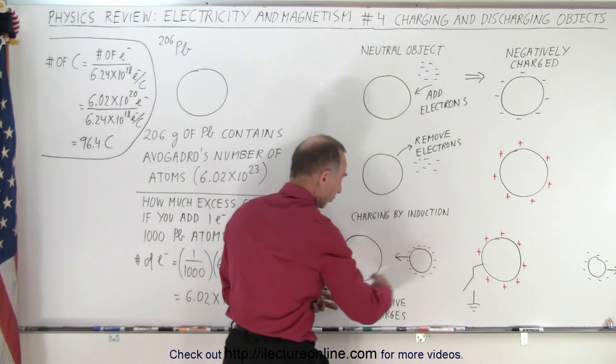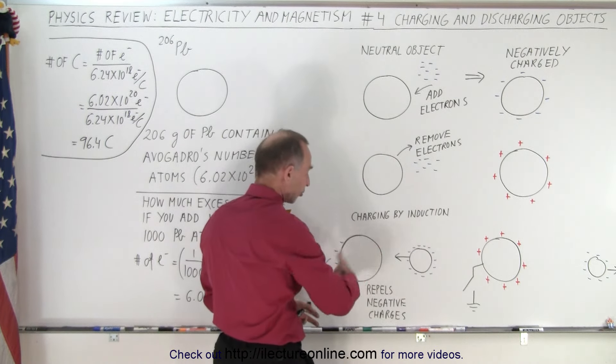Let's say we start with a neutral object. Now these are conductors. Conductors allow charges to move freely throughout the object, on the surface of the object. So let's say that we have a neutral object, which means it has just the same number of protons as electrons, and now we add additional electrons. What happens?